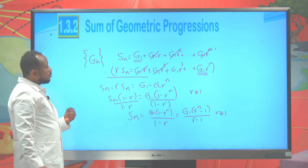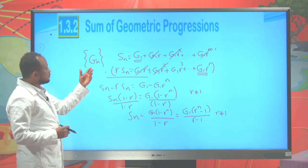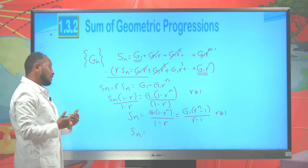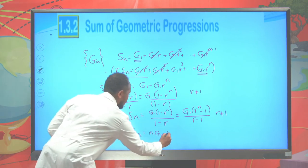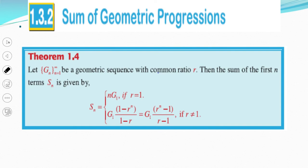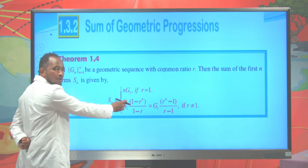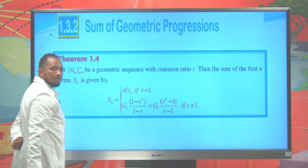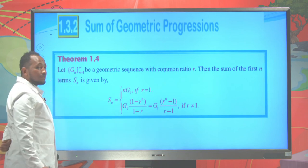If R = 1, all terms are the same — G1, G1, G1 — so the sum of N terms is simply N × G1. To summarize: the sum of the first N terms of a geometric progression with first term G1 and common ratio R is Sn = G1(1 − R^N)/(1 − R) for R ≠ 1, or equivalently G1(R^N − 1)/(R − 1), and Sn = N·G1 if R = 1.